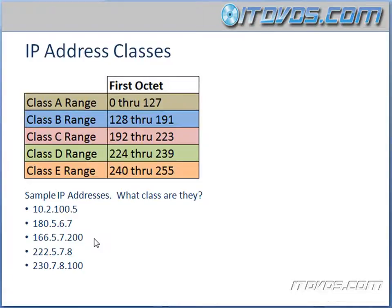IP addresses have classes. You've probably already heard me say a Class C address or a Class B address. What defines the class that an address is in is the first octet.